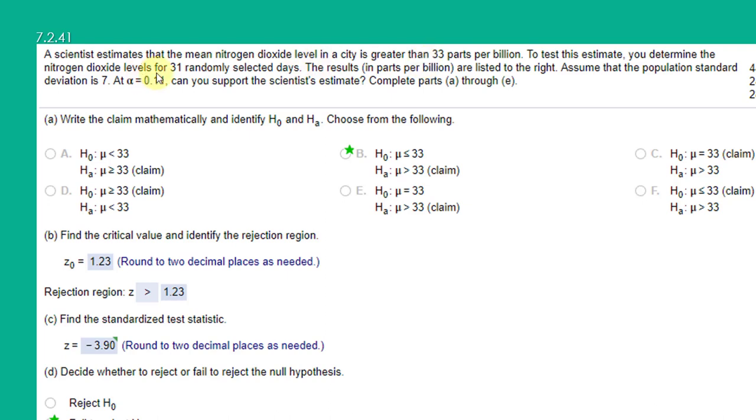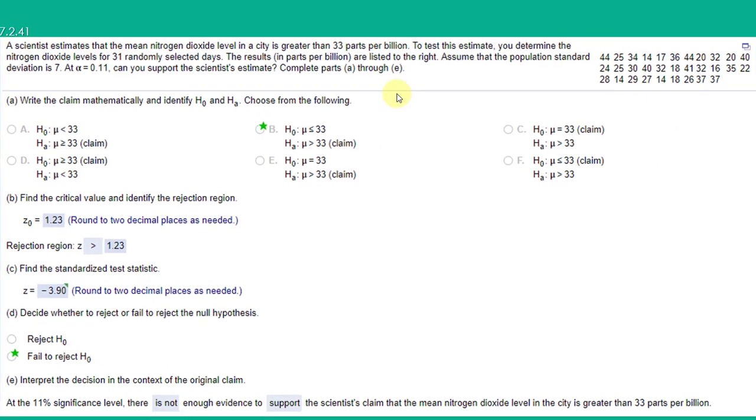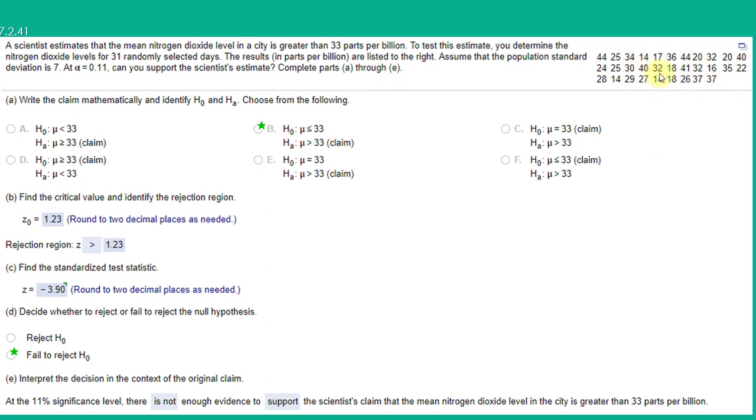We took a random sample of 31 days, and we've got the results over here of the mean nitrogen dioxide level we measured. We are told to assume the population standard deviation is 7, given an alpha of 0.11. Can you support the scientist's claim, his estimate?